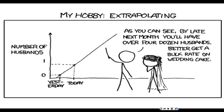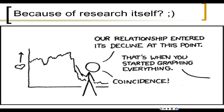Extrapolations with small samples are even more unreliable. If you've got a small N — anything less than about 30 to 50 — you really shouldn't trust extrapolations; aim for hundreds. Sometimes the research itself can change things. There's a joke where a guy says his relationship declined, and his partner replies, 'That's when you started graphing everything.' So research can cause a reaction. That's all I have to say about prediction — it's just something you can do with regression. Thanks for paying attention, and I'll do more later.